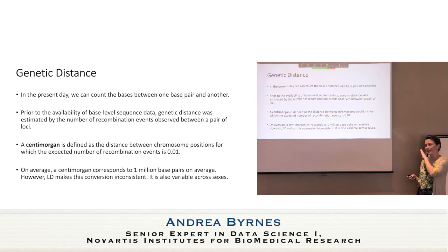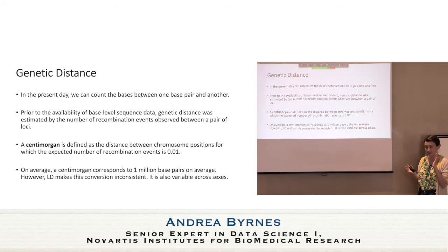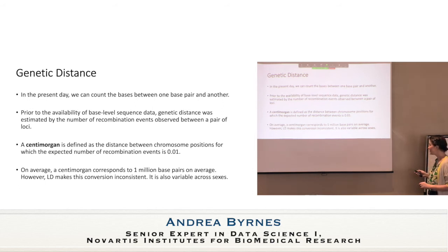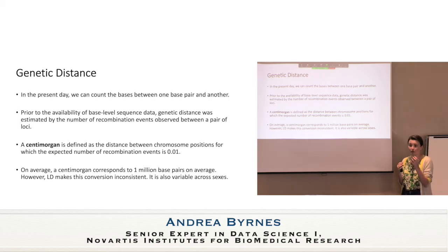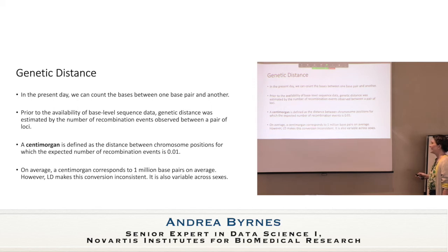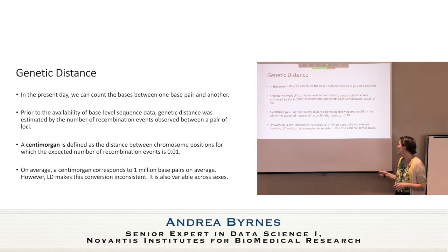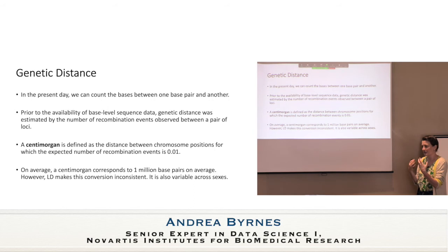Genetic distance: in the present day we just count bases between one base pair and another. But prior to base-level sequence data, genetic distance was measured by the number of recombinations observed between a pair of loci across as large a sample as you could get. On average, a centimorgan corresponds to about a million base pairs — but LD makes this conversion really inconsistent and super variable across the genome, and it can also vary across the sexes due to recombination frequency differences.